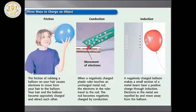By conduction: when a negatively charged plastic ruler touches an uncharged metal rod, the electrons in the ruler travel to the rod and the rod becomes negatively charged. By induction: when a negatively charged balloon is brought near a metal beam, it makes a small section of the metal beam have a positive charge. The electrons in the metal are repelled and move away from the balloon.